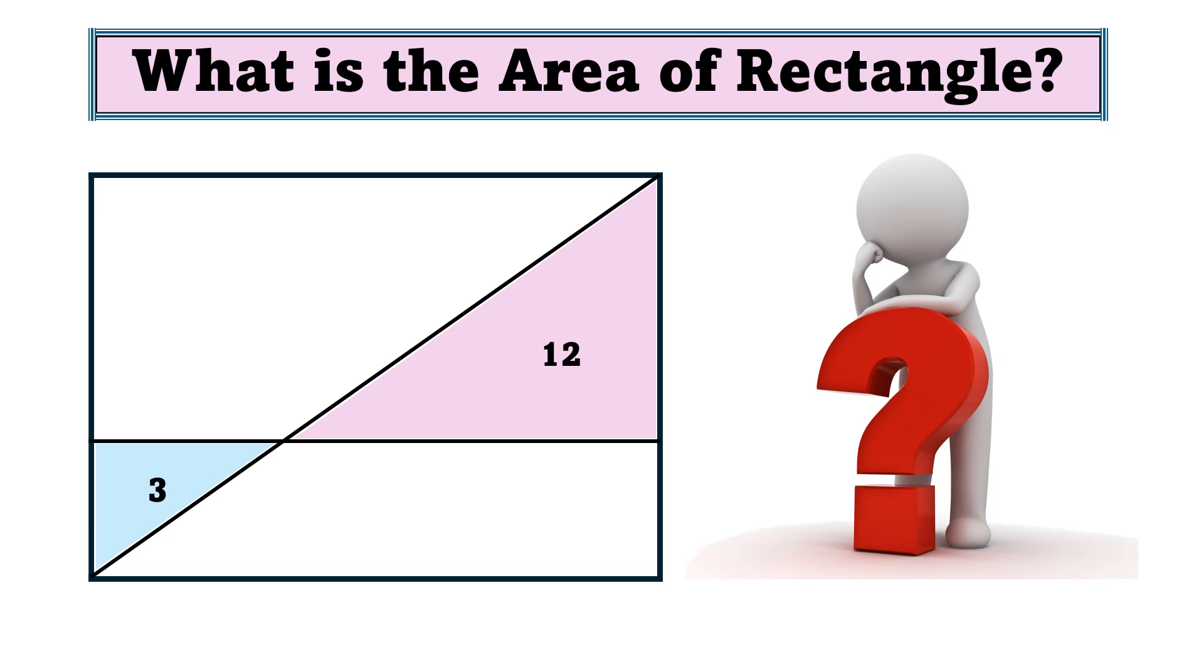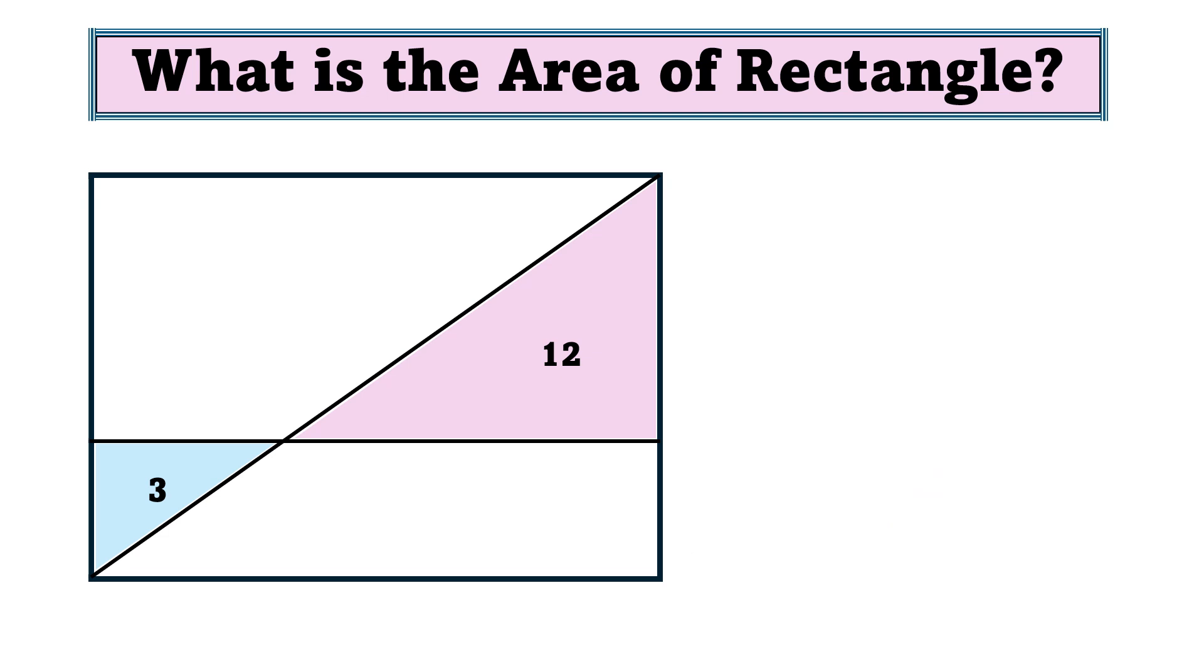Let's move towards the solution. First of all, we label this rectangle as A, B, C, D, and these three points as P, Q, R.